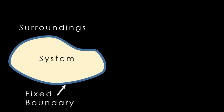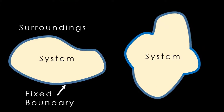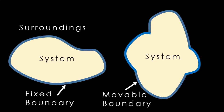Also, the boundary can be a fixed boundary, which means that the boundary does not displace due to energy interactions. Or it can be a movable boundary, having some kind of displacement along with a change in its shape as the energy interaction takes place.